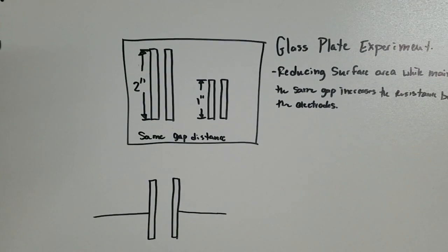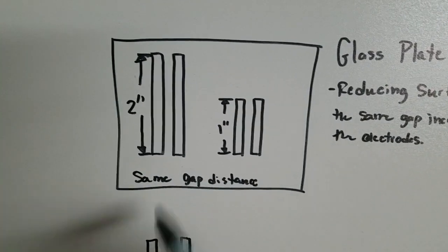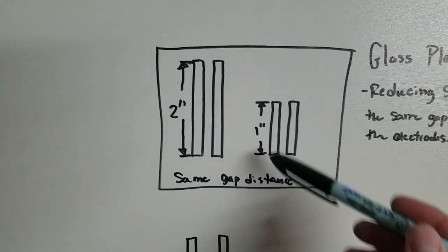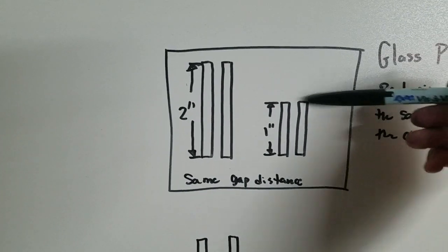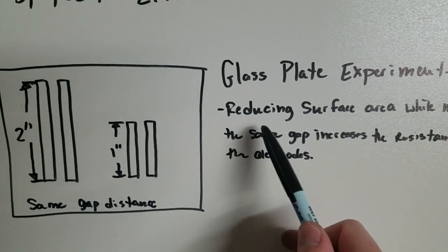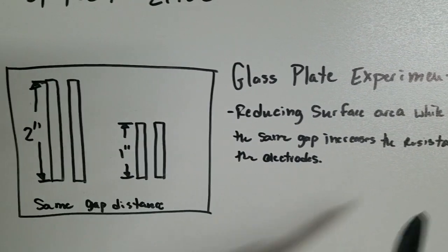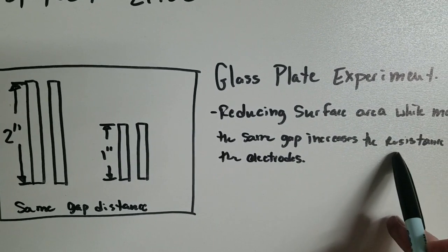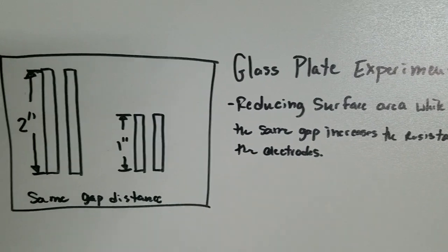If you've seen my glass plate video where I had the two pairs of electrodes, they're identical in size except one pair is cut so it's half the length of the other. And what I showed in that video, when I put water between them and measured the resistance, reducing surface area while maintaining the same gap increases the resistance between the electrodes.